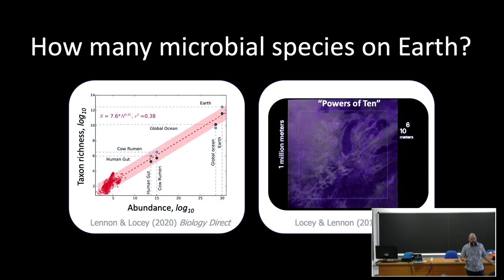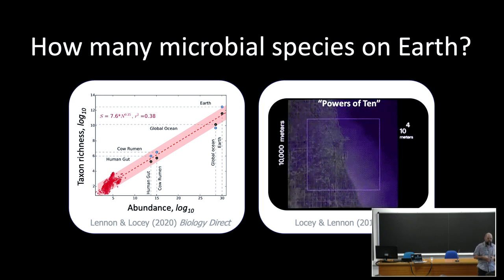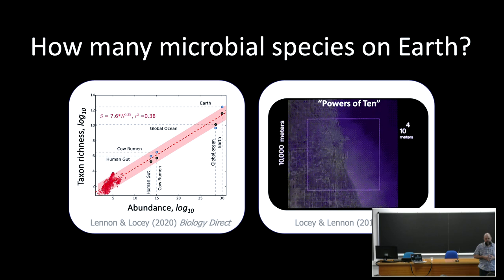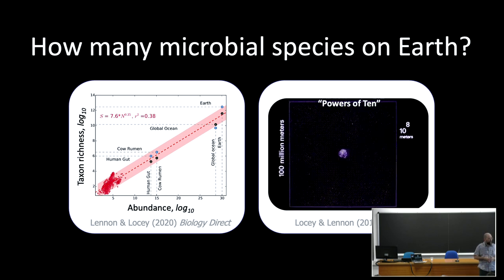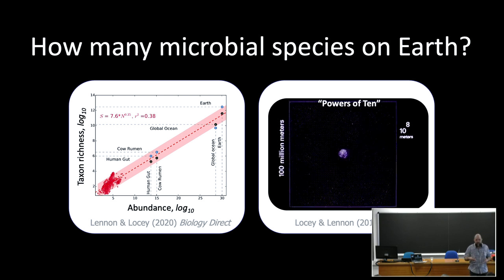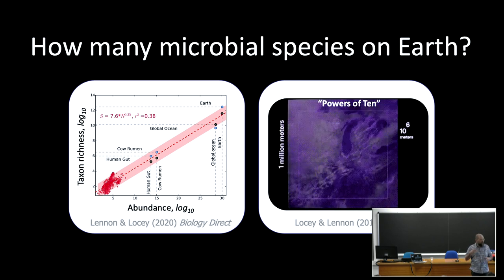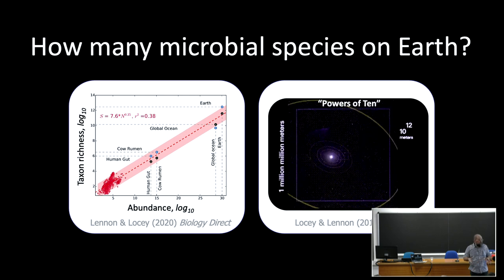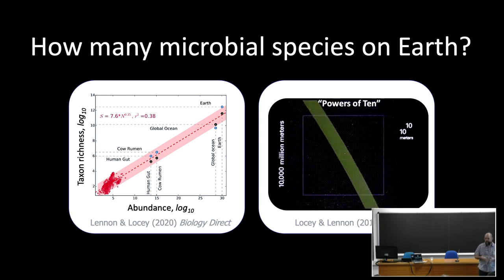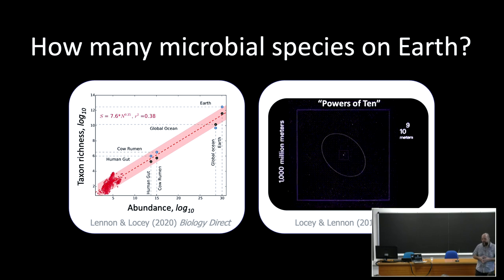Combining that with other biodiversity theory, we were able to make predictions for how many microbial taxa there may be on a planetary scale. That number happens to be about 10 to the 12, or one trillion. For those familiar with the census of life on Earth, plants and animals are estimated at 1 to 10 million species. Including microbes expands the number of species we share the planet with by six orders of magnitude. We've been testing that with different data sets, thinking about speciation rates and extinctions, and whether there's been enough time on Earth to arrive at such a number.